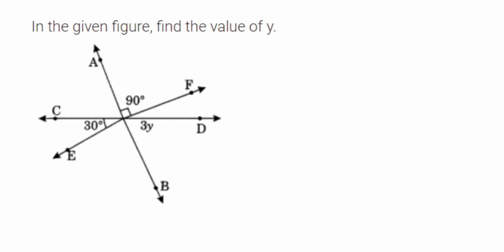Hey everyone, here is a question from lines and angles. The question is: in the given figure, find the value of y. The figure shows three angles - one is 90 degrees, another is 30 degrees, and the third is 3y. We have to find the value of y. Now, how to solve this?